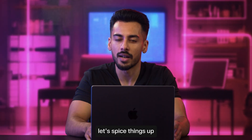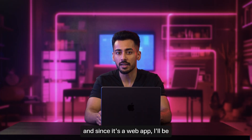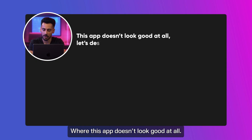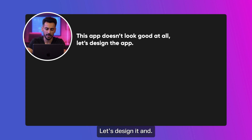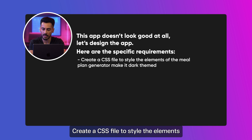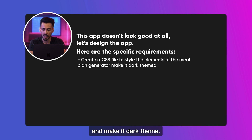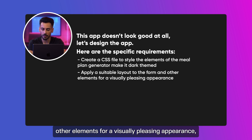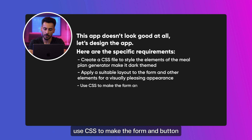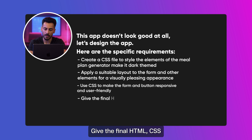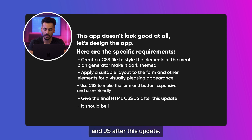This works really well but it doesn't look that great — it's so boring right now. Let's spice things up and move on to the aesthetics. Now we are at the final step, and since it's a web app I'll be writing the UI in CSS. Here are the specific requirements: create a CSS file to style the elements of the meal plan generator and make it dark theme — I love dark theme. Apply a suitable layout to the form and other elements for a visually pleasing appearance, use CSS to make the form and button responsive and user-friendly, and give the final HTML, CSS, and JS after this update.